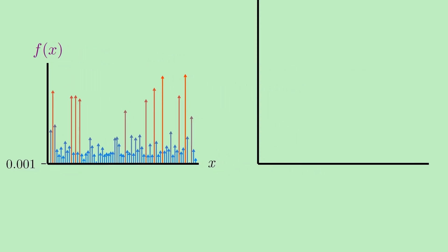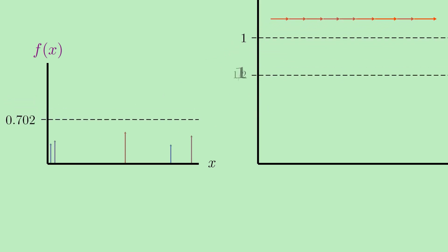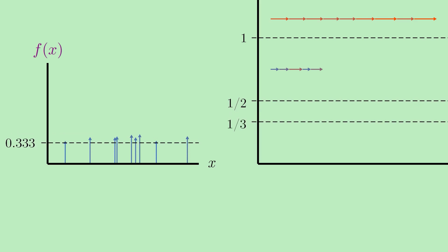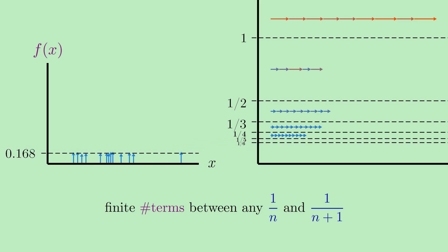Alright, but now think about what this means for how many non-zero terms there could possibly be in our uncountable sum. If there can only be a finite number of terms bigger than 1, and likewise, only a finite number of terms bigger than, say, 1/2, then there can only be a finite number of terms that are between 1 and 1/2. Likewise, since there can only be a finite number of terms that are bigger than 1/3, there can only be a finite number of terms between 1/2 and 1/3. And similarly, only a finite number of terms between 1/3 and 1/4, and so on. In fact, there can only be a finite number of terms between any two fractions 1 over n and 1 over n plus 1.